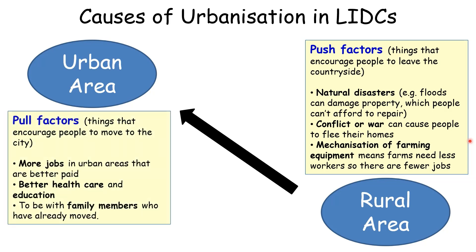Meanwhile, there are advantages of the urban areas, known as pull factors. There could be more jobs and better paid jobs than in the countryside. There could be better healthcare with larger hospitals and more capable doctors. And schools — there are many more secondary schools available within cities than within the countryside. Finally, there is the pull of being with family members who have already moved to the cities. So these factors show migration, the movement of people from the countryside to the cities, which causes the cities to grow.